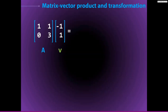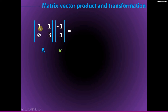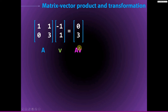Let's start by thinking about a matrix-vector product. We have a matrix A and a vector V that are the right sizes to multiply. We compute A times V: the first component is one times minus one plus one times one, and the second component is zero times minus one plus three times one. Each component in the resulting vector is the dot product between each row of A and each column of V. Here is the result — the matrix-vector product AV.